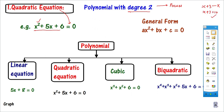Our topic is Quadratic Equation. The general form is written as ax² plus bx plus c, where a is the coefficient of x², and b is the coefficient of x. There is only one condition for a Quadratic Equation: a should not be 0. If a is 0, then it will not be a Quadratic Equation — it will be linear.